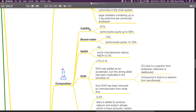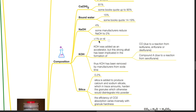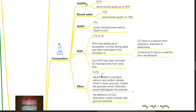Composition of soda lime: calcium hydroxide 81% (some books quote up to 90%), bound water 15% (some books quote 14–19%), sodium hydroxide 4% (some manufacturers reduce this to 2%), potassium hydroxide less than 1%. Potassium hydroxide was added as an accelerator, but this strong alkali has been implicated in the formation of carbon monoxide and compound A. Thus, KOH has been removed by manufacturers from soda lime. Silica 0.2% — silica is added to produce calcium and sodium silicate, which harden the granules, which otherwise would disintegrate into powder.